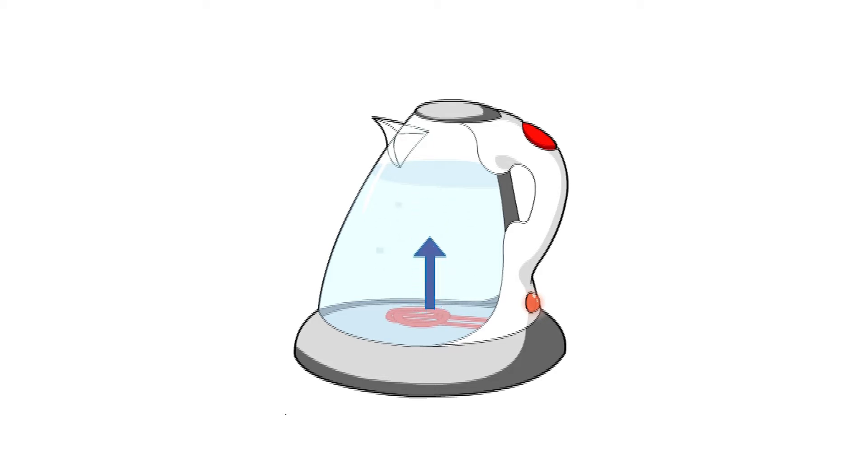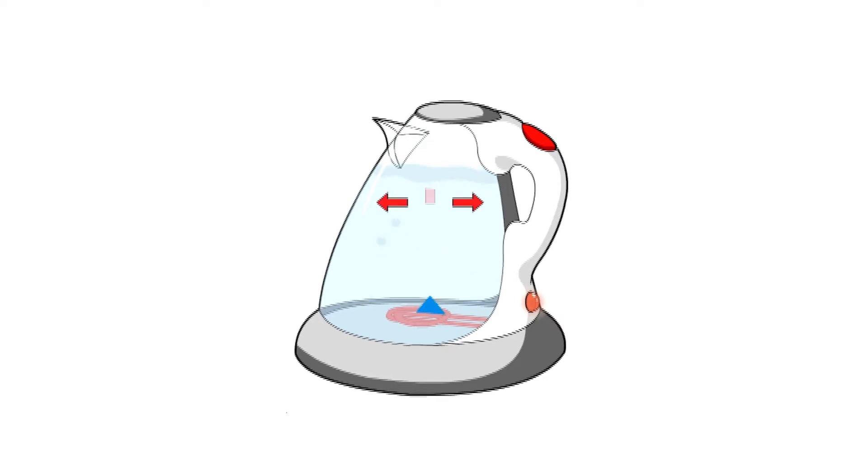The heated water expands and becomes less dense than the cold water above, so the heated water rises up the kettle. As the heated water rises, it displaces the cold water. The colder, denser water falls to the bottom where it is then warmed by the heating element.